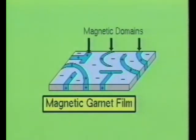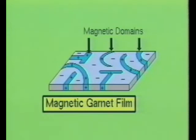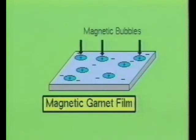In 1967, a scientist at Bell Telephone Laboratories discovered some very unusual effects in a thin wafer of magnetic garnet material. The thin magnetic garnet film contained magnetic domains, which formed a maze-like structure. When a magnet was placed near the magnetic garnet material, the serpentine patterns would shrink into tiny cylinders, which when viewed on end would look like bubbles.